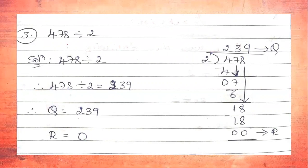Since 2×9=18, the number 18 is exactly divisible by 2. We write 18 and subtract: 18−18=0. For dividend 478 and divisor 2, we get remainder 0 and quotient 239. Therefore 478 ÷ 2 = 239, where Q = 239 and R = 0.